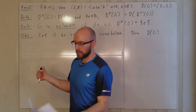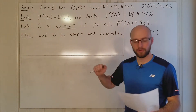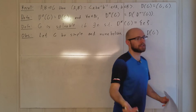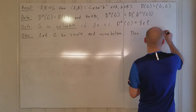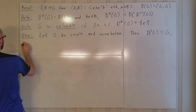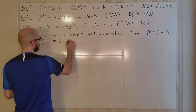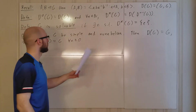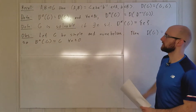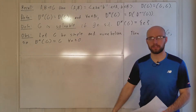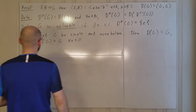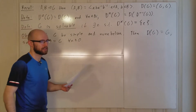We'll prove later that D(G) equals the identity if and only if G is abelian. So since G is not abelian, D(G) is not trivial, which forces D(G) = G. By induction, Dⁿ(G) = G for all n ≥ 0. Simple non-abelian groups are very much not solvable — we never reach the identity. By the way, the reason we call this 'solvable' comes from Galois theory, which we won't cover in this course.